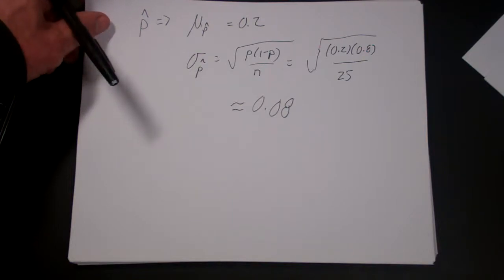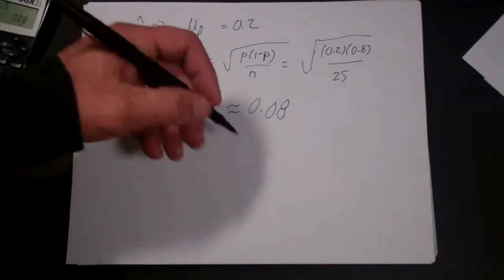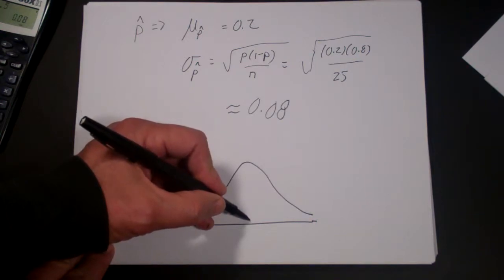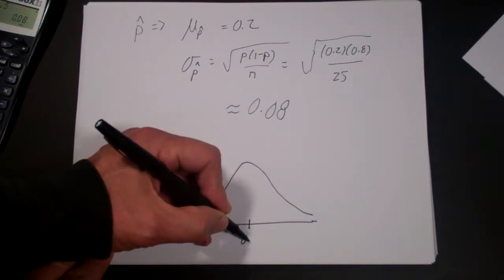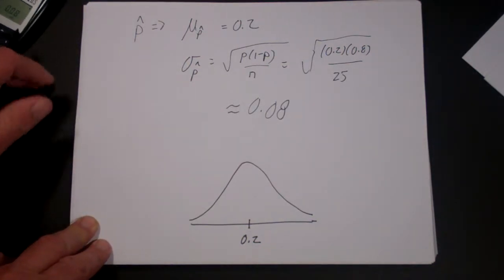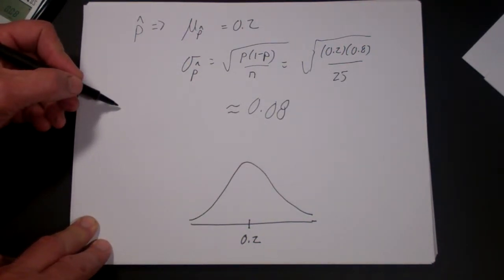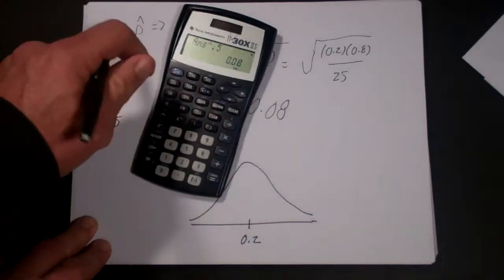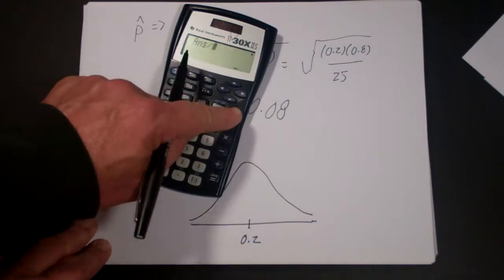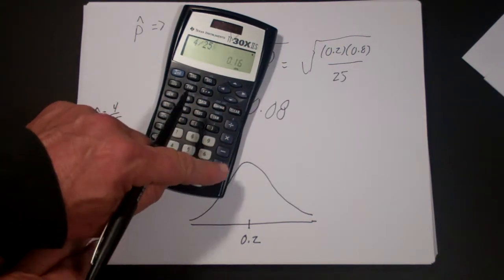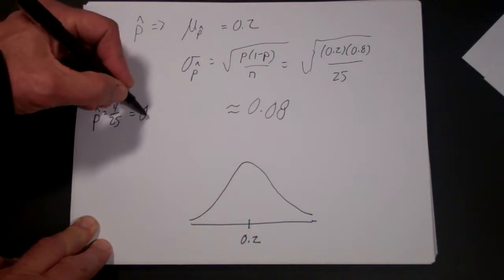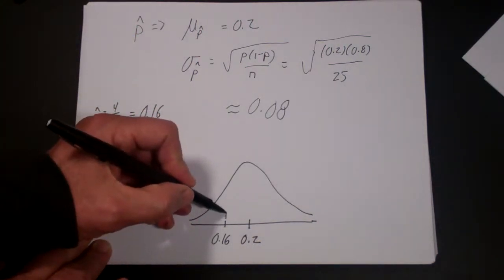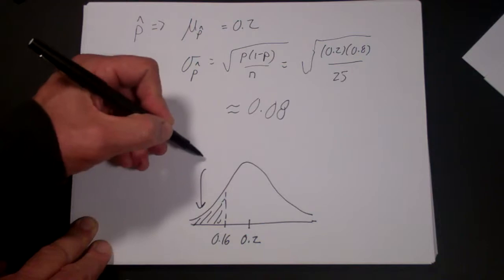Now since it's normally distributed, let's just draw a picture for a second. We have a normal distribution, and we have the true number of bad ones is 0.2. And we want to know what's the probability that greater than 4 are defective. So 4 out of 25, that's what our p hat is going to be. Let's see what 4 out of 25 is. 4 divided by 25 is 0.16. So we want to see what the probability that we have fewer than 0.16.